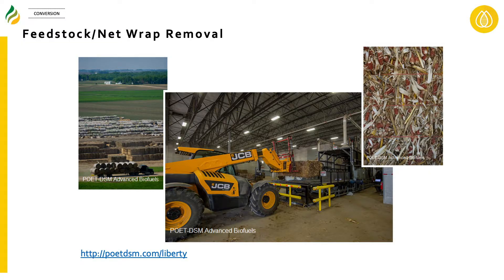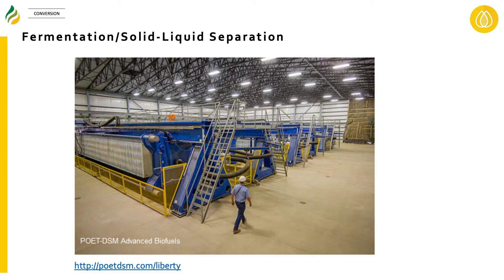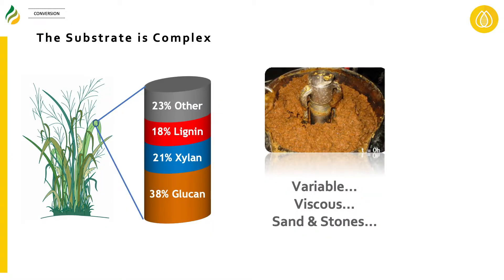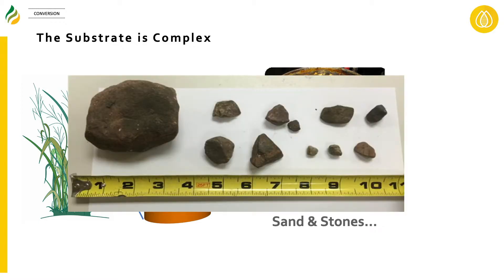You also need huge processing equipment to bring the biomass into the refinery, reduce particle size, and prepare it for hydrolysis. Massive mechanical systems are needed for solid-liquid separation. The substrate is very viscous and variable. In addition, the feedstock brings in sand and stones — actual three-inch stones documented at a U.S. facility — which eat into processing equipment and cause constant shutdowns, preventing continuous operation.